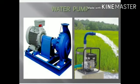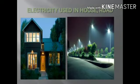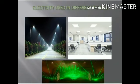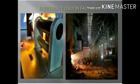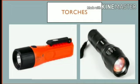Electricity makes it possible to light our homes, roads, offices, and factories even after sunset. This helps us to continue working at night. The supply of electricity may fail, or it may not be available at some places. In such situations, a torch is sometimes used for providing light.